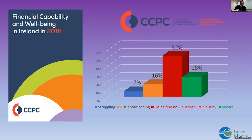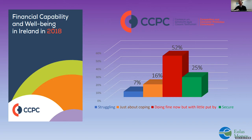The CCPC launched the Financial Capability and Well-Being Study in 2018. From that study, 7% are struggling in day-to-day life compared to 25% on the right-hand side who had a sense of security for today and into the future. Our job is to try and get as many of you from the struggling side to the secure side as quickly and as safely as possible.